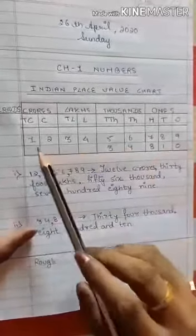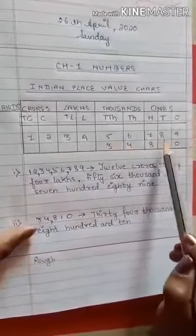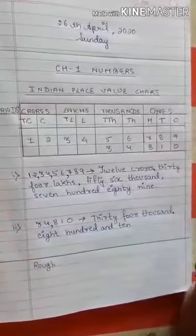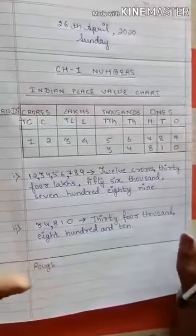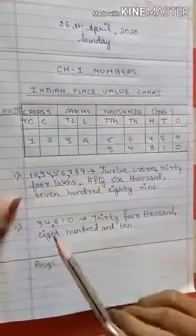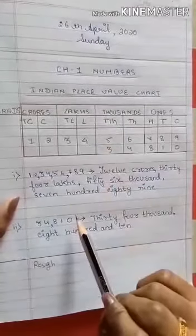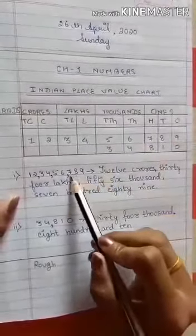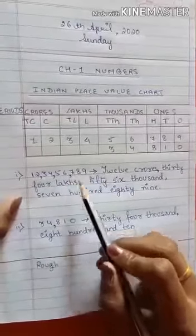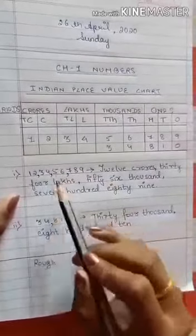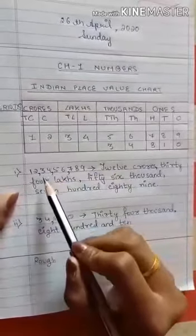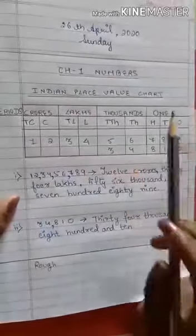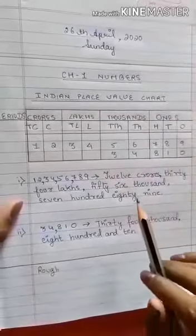Now to explain how we write this in words, I have taken the first example: 1 2 3 4 5 6 7 8 9. Children, always keep this in mind — whenever you have to write the number name of any number, the very first step is to give commas. How are you going to give commas? You put commas according to the periods: first period is ones, tens, hundreds — then comma; second period is thousand, ten thousand — then comma; then lakh, ten lakh — comma; and then crore and ten crore.